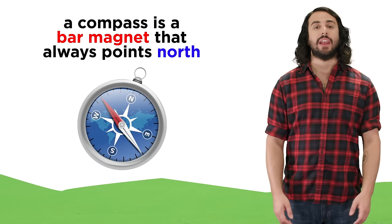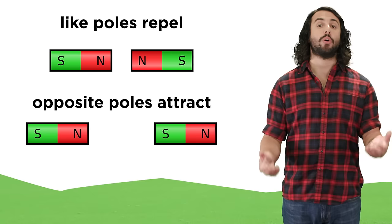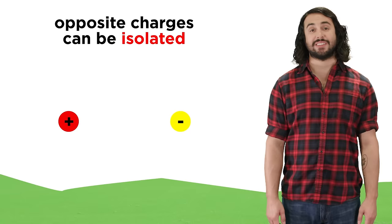This is how a compass works. It's just a magnetic needle that always points north. Like poles repel and opposite poles attract, just like electric charges.